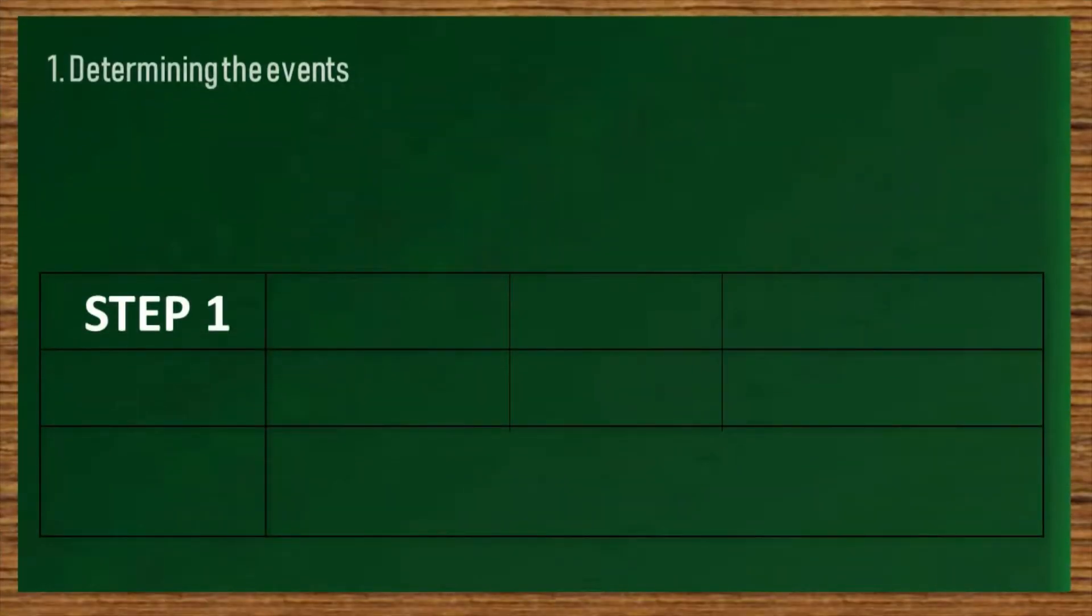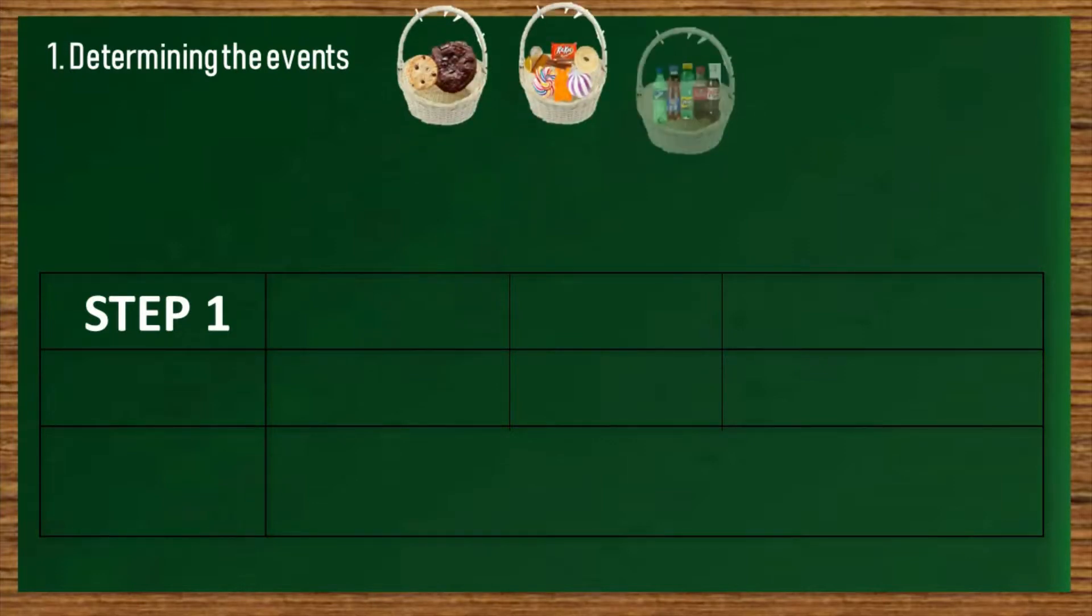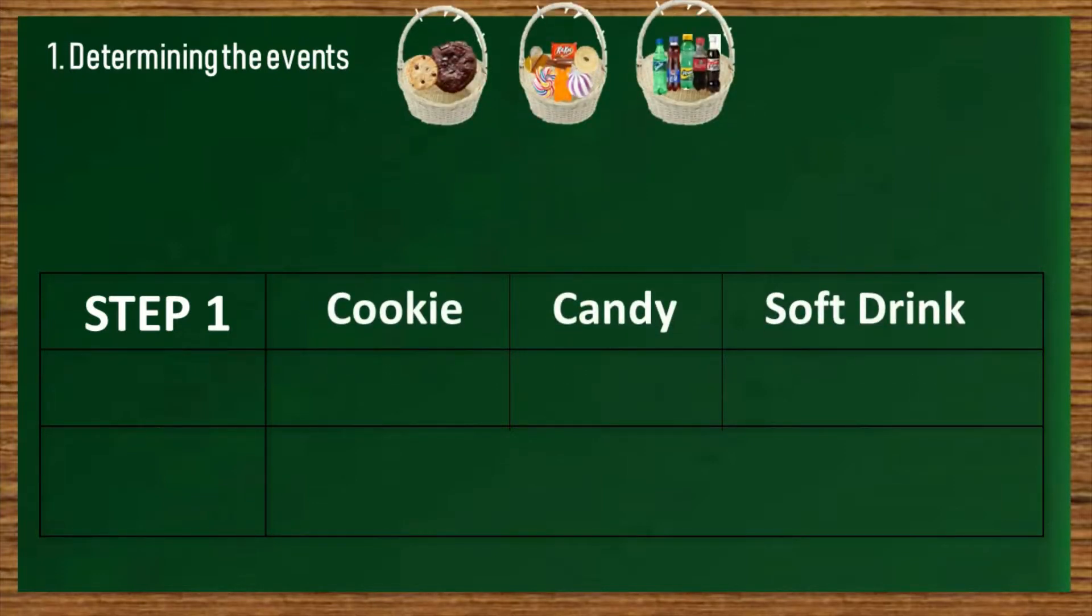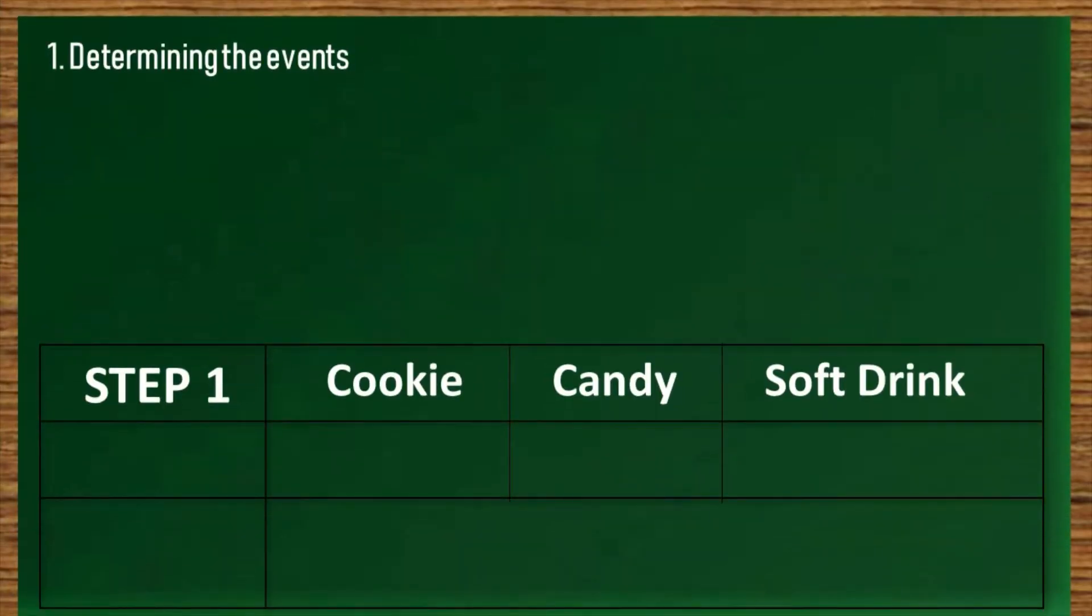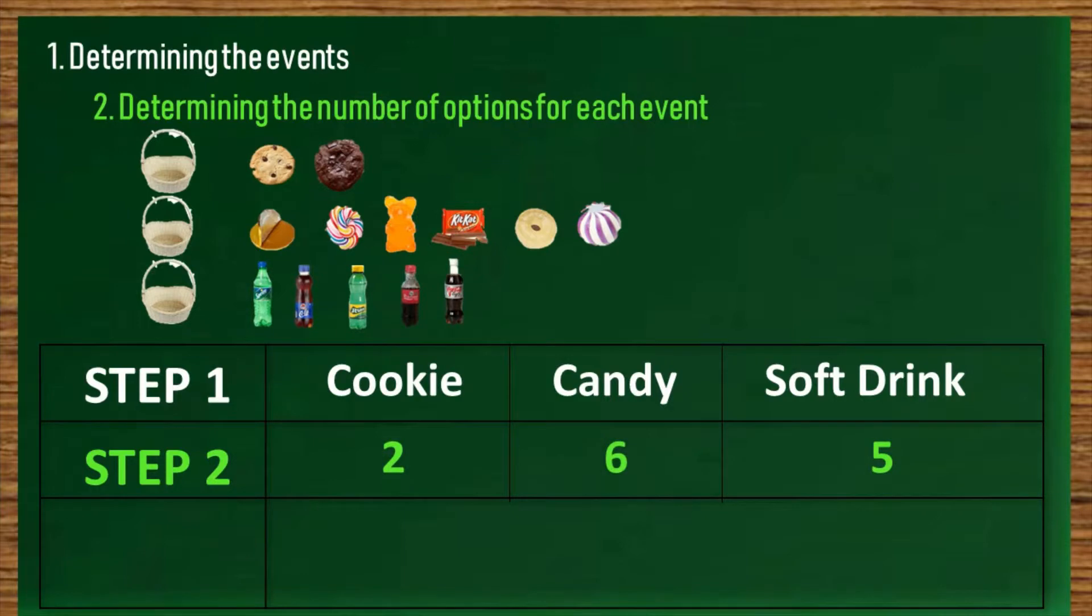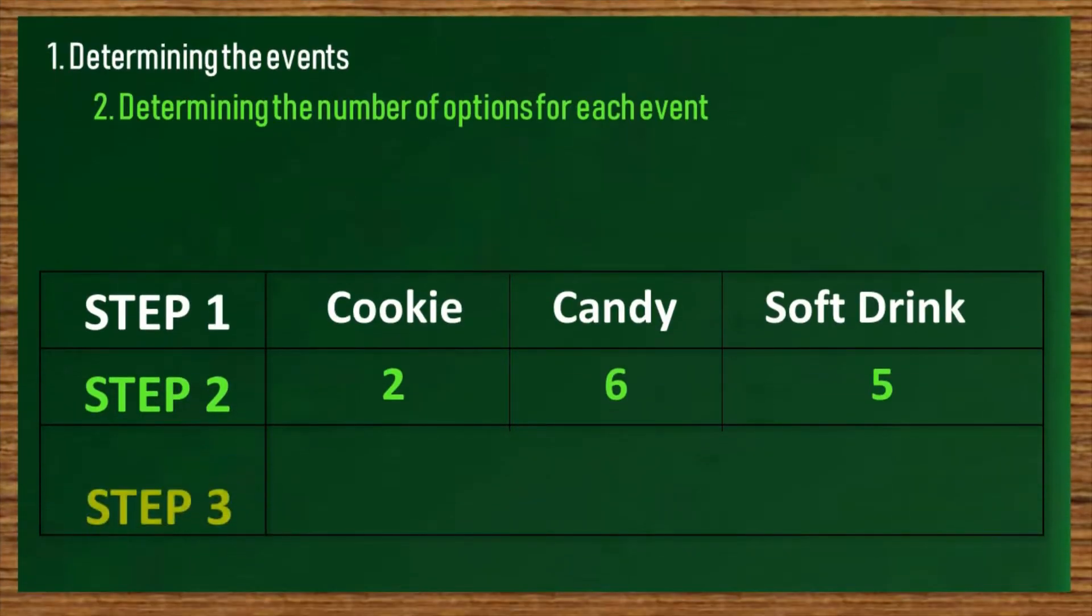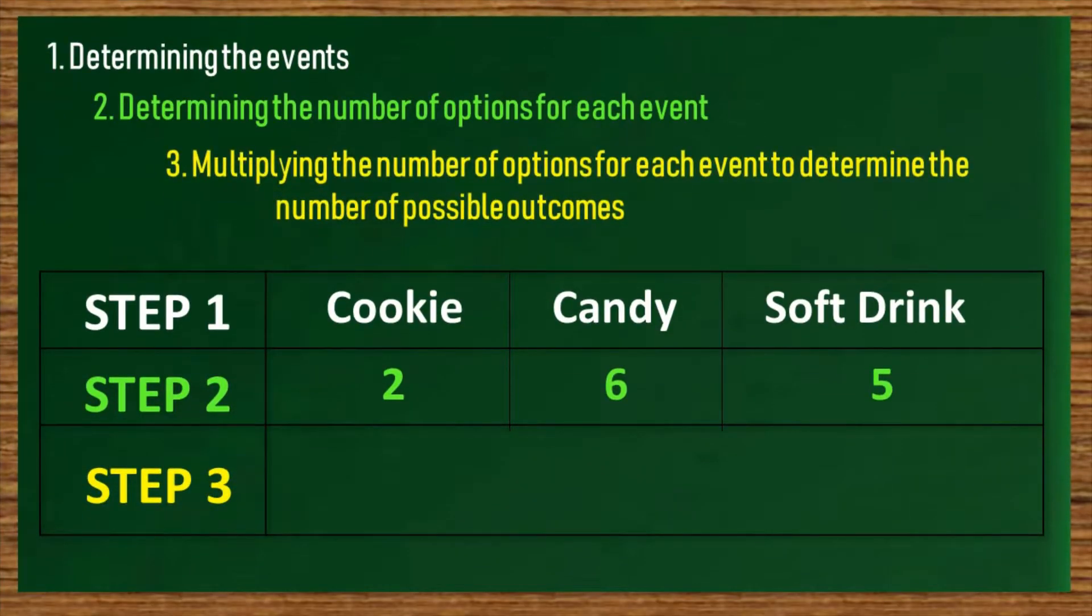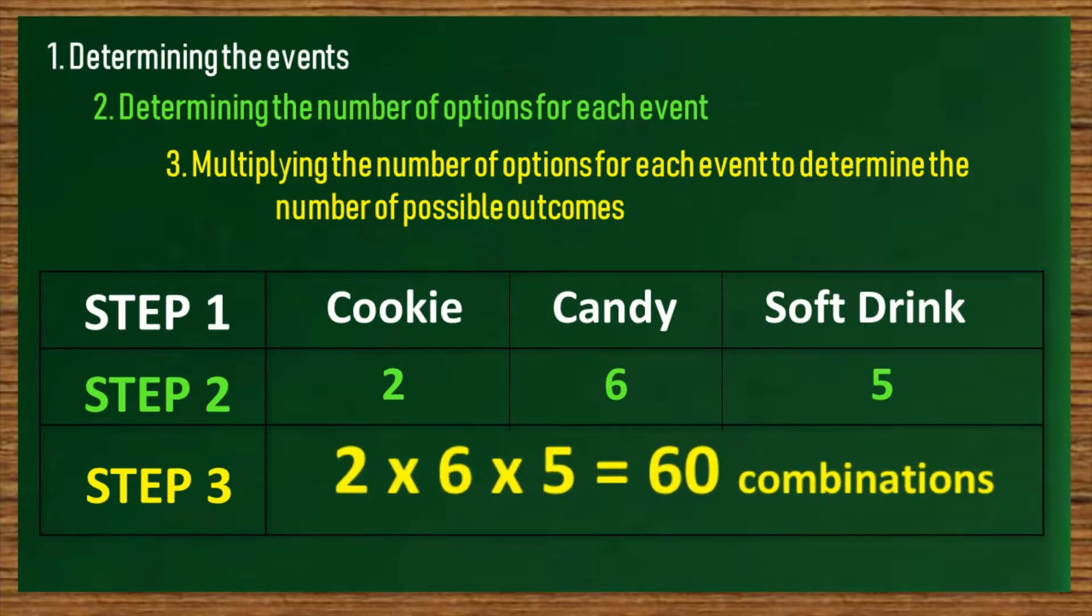First, determining the events, and in this case we have three: the cookie, candy, and soft drink as our variables. Second step is determining the number of options each has. Cookies has two, the candies has six, and soft drinks has five. The last step is multiplying the number of options for each event. Therefore, two multiply by six multiply by five, that will result in 60 possible combinations.